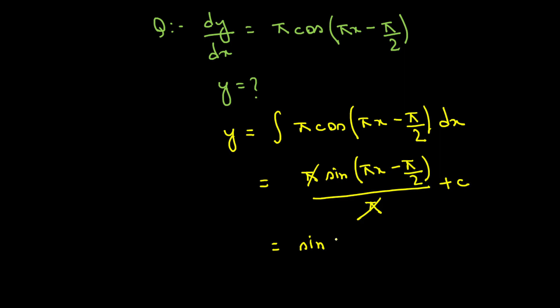The pi cancels, so we get sin pi x minus pi by 2 plus c. Or that, if we integrate pi cos pi x minus pi by 2, we get sin pi x minus pi by 2 plus c.